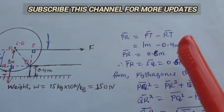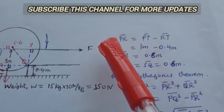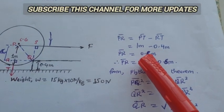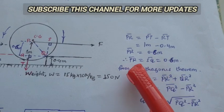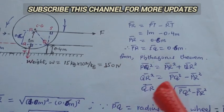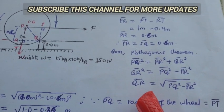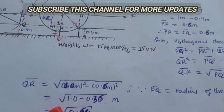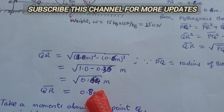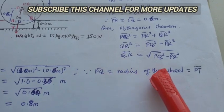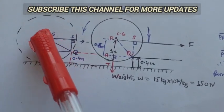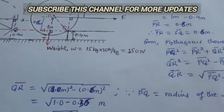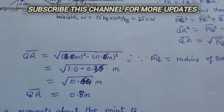Let us see the calculations here. The PR will be obtained as 0.6 meter and also from Pythagorean theorem, the QR will be obtained as 0.8 meter. Remember that PQ is equal to PT is the radius, which is equal to the radius of the wheel.